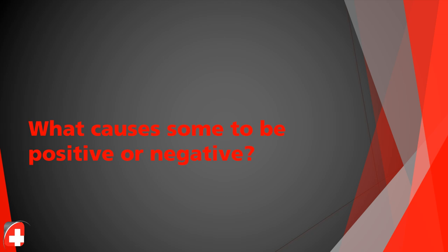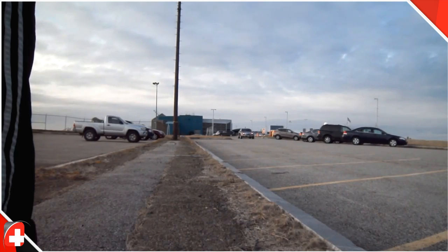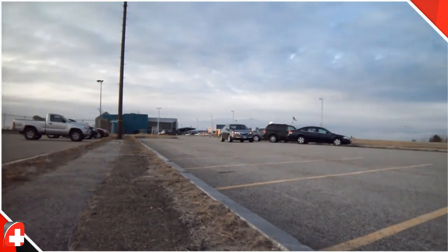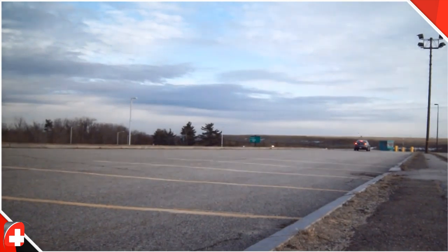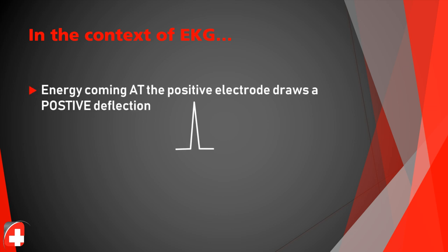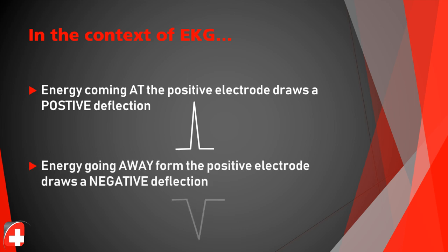What causes things to be positive or negative? It all comes down to energy vectors. An energy vector is very much like a Doppler shift. When energy moves towards an electrode, you get a positive deflection — just like a car horn getting higher as it approaches. Energy going away from the positive electrode produces a negative deflection. Think of that car horn whenever you think about the direction energy is moving.